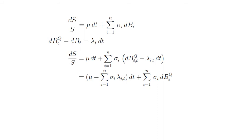Now notice here that the drift part μ minus the sum of expected risk premiums per unit of systematic risk times the amount of systematic risk is nothing else than the risk-free rate. Hence we just rewrite the last equation as dS over S equals r dt plus the sum from i equals 1 to n σ_i times dB_i^Q.